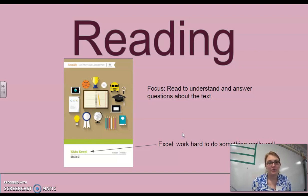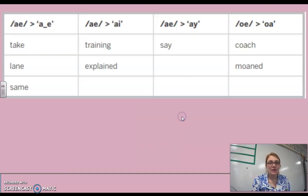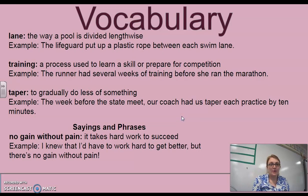All right, now for our reading portion. We're still looking at our Kids Accelerator. Okay, some of our sound spellings for the A sound. We have take, lane, and same are all A space E. Training and explained are A-I. Say is an A-Y. And then for our O sound spelled O-A, we have coach and moaned.